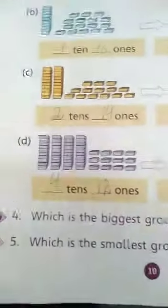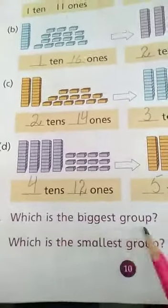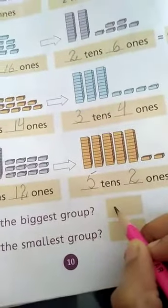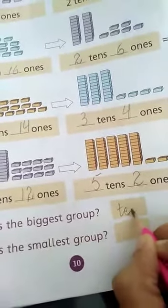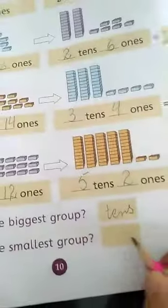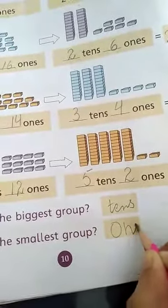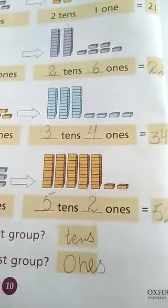Now on question number 4, which is the biggest group? Tens group. Which group is bigger? Tens group. And which is the smallest group? Ones group. Okay. Thank you, students.